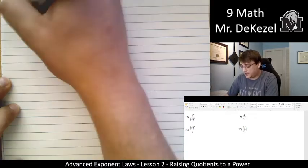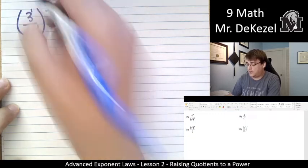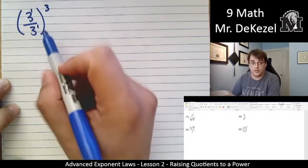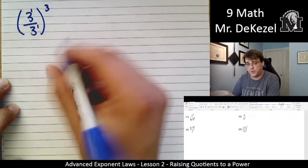All right, if we go 3 to the power of 1 divided by 3 to the power of 1, we're going to subtract the exponents. 1 minus 1 is 0. So 3 to the power of 0.